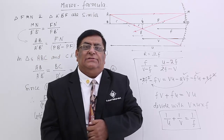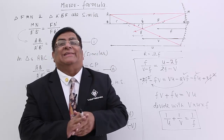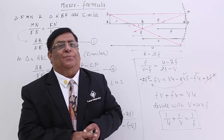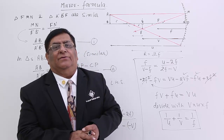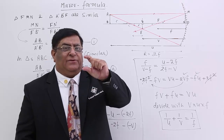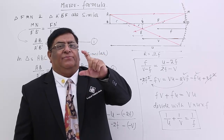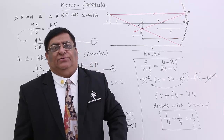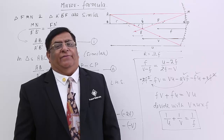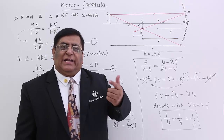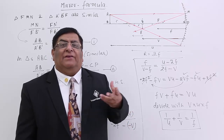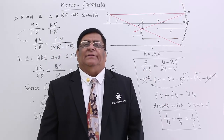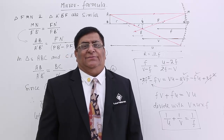So this is the relation between different distances. We have another very important feature — you have seen that sometimes the image becomes larger and sometimes the image becomes shorter, and that ratio between the two sizes is known as magnification. So in the next lecture we will see what is the magnification formula in mirrors. Thank you.